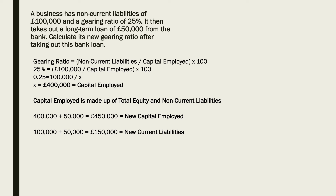Now we need to calculate the new non-current liabilities. We've been given the non-current liabilities of £100,000. If you take out a bank loan, we assume that's going to be more non-current liabilities — more long-term debt to the business. So £100,000 plus £50,000 is £150,000.